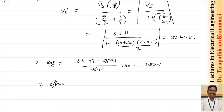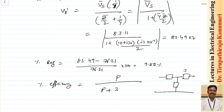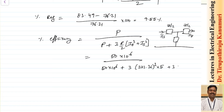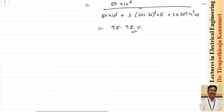For efficiency using nominal T, impedance is split into two Z/2 halves with different currents Ir and Is flowing through each. Efficiency = 50×10⁶ / (50×10⁶ + 3×273.36²×5 + 3×259.14²×5) = 95.92%.